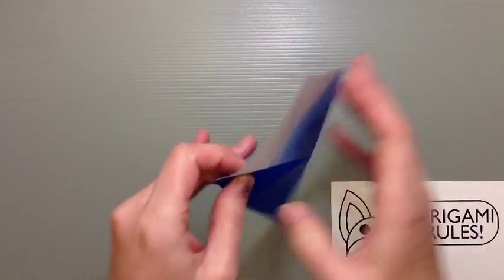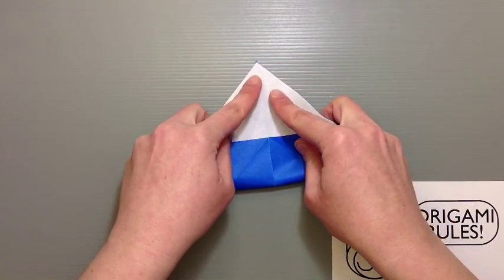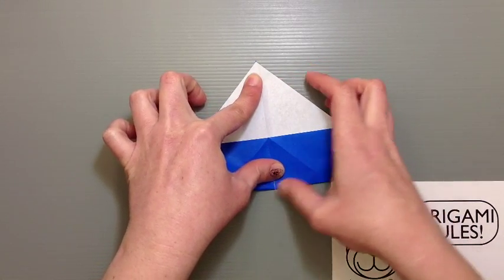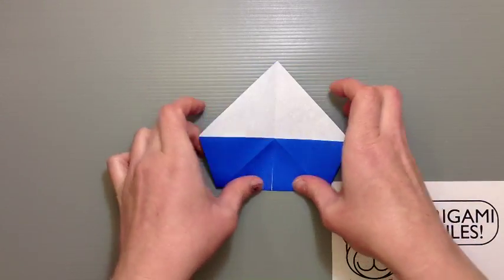I'm going to sort of flip things over for a second and go ahead and fold in half from bottom to top here. And we already have the crease there so it should go pretty smooth. Just fold straight up.